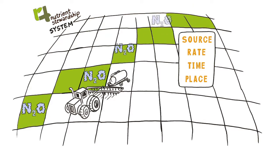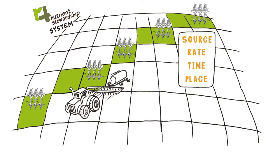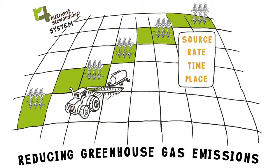The approach also helps growers produce more food per unit of nutrient applied, reducing greenhouse gas emissions further.